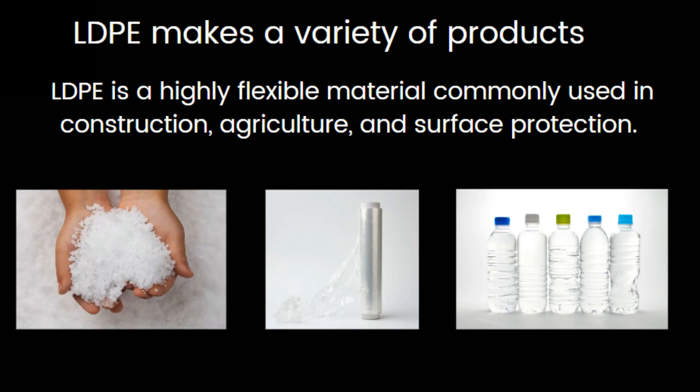LDPE – Low-Density Polyethylene. LDPE is a highly flexible material commonly used in construction, agriculture, and surface protection. It accounts for approximately 17 percent of total polyethylene production in the USA, according to the American Chemistry Council.